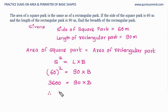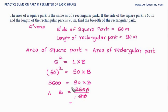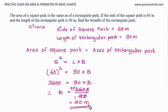60 squared is 3600, which equals 90 into breadth. Therefore, breadth equals 3600 divided by 90. 9 ones are 9, 9 fours are 36, giving us 40. Breadth is 40 meters. The unit of measurement for breadth is directly written as meters in the answer.